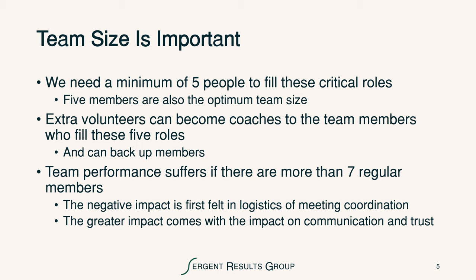We mentioned earlier why team size is so important. We have to have a minimum of five people to fill these five critical roles, and it just so happens that five members are also the optimum team size. Extra volunteers can become coaches to back up the five critical members. But team performance suffers if there are more than seven regular members. The negative impact is felt first in meeting coordination logistics and team actions, and the greater impact comes with communication and trust. Five is optimum — you can't have less, and if you get too many more, you're going to start holding down the productivity of the team.